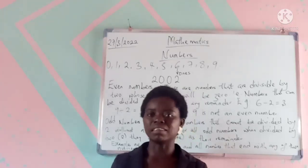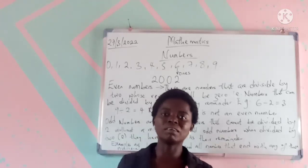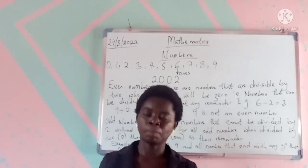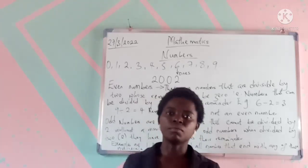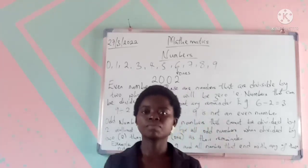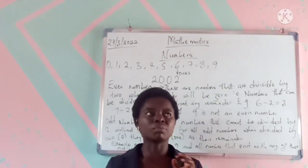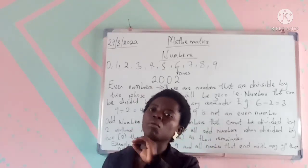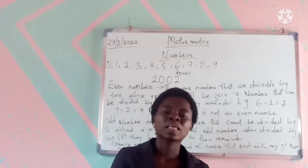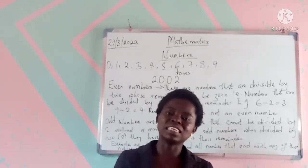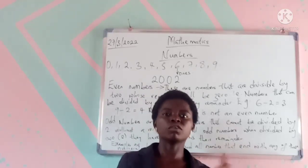Any time an odd number is divided by 2, it will always leave a remainder, and that remainder will be 1. For example, we have 1, 3, 5, 7, 9. And also, when we progress from single digits into two digits, any number that ends in any of these odd numbers will also be an odd number. For example, 101 will be an odd number because the last digit is an odd number.